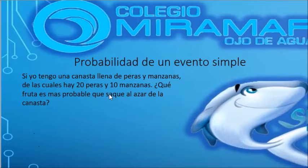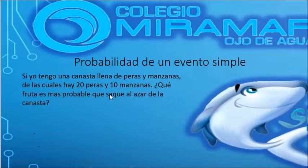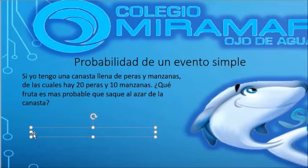El ejercicio nos pide que obtengamos dos eventos simples. Nos dice que hay una canasta donde hay peras y manzanas, nos da la cantidad de cada una de ellas, y nos pide: ¿cuál es el fruto más probable que saquen al azar de la canasta? Tenemos que calcular la probabilidad del evento simple de las manzanas y de las peras por separado y comparar cuál tiene mayor probabilidad. Vamos a calcular primero el de las peras.